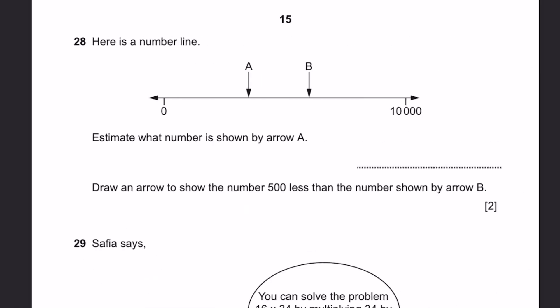Question 28. Here's a number line. Estimate what number is shown by arrow A. And then draw an arrow to show the number 500 less than the number shown by arrow B. So arrow A, this distance, is just before the halfway mark, this much below. And this can be estimated 1, 2, 3, 4 of the same distance comes from 0 to 5,000. This is 5,000. That means this can approximately be 3 fourths of the way. That's 5,000 into 3 by 4, which is equal to 3,750 approximately. That's the answer.